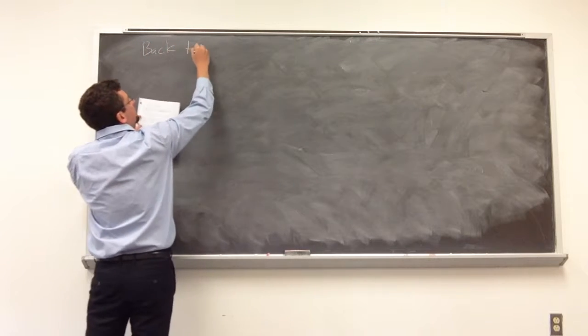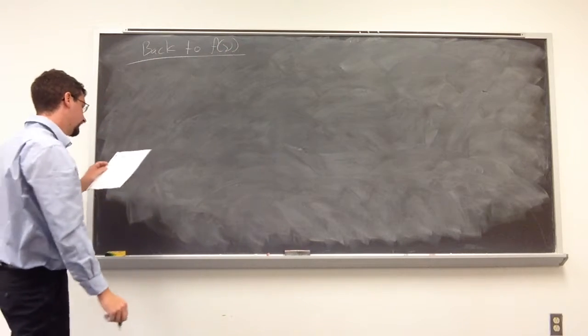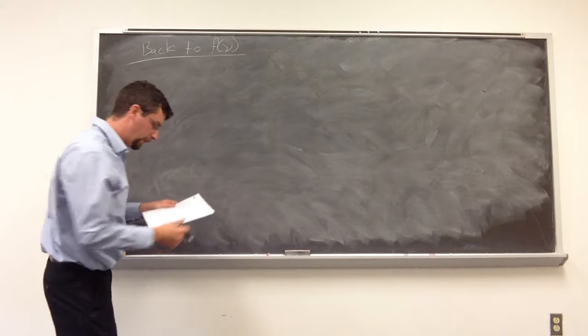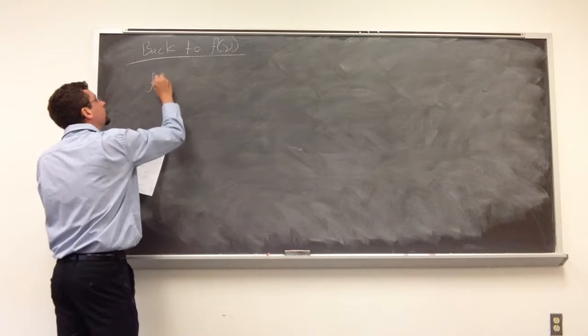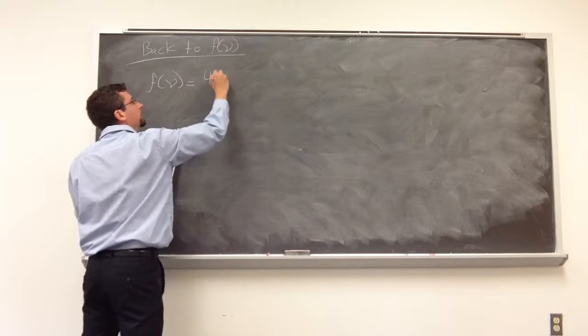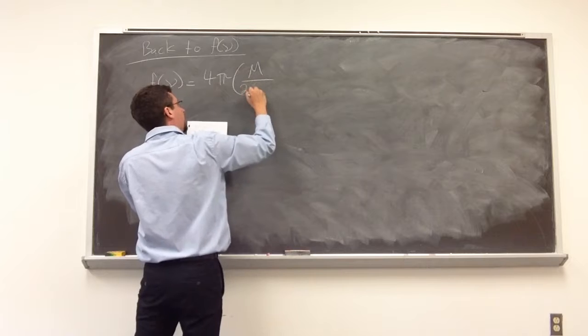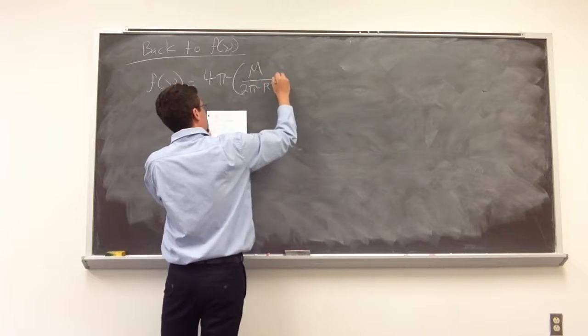So let's go back to that distribution function, that f of speeds. So it can be shown for a perfect gas that if we're looking at the distribution of speeds, it ends up being 4 pi times m divided by 2 pi RT to the 3 halves.